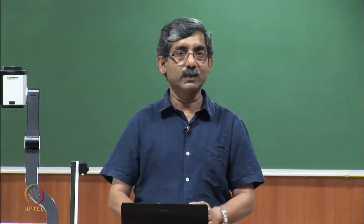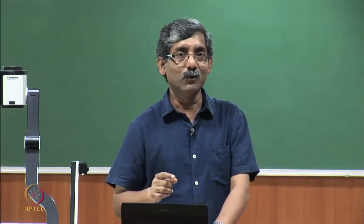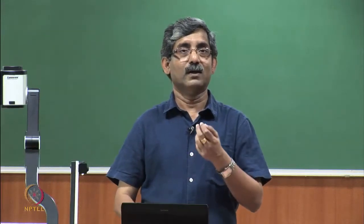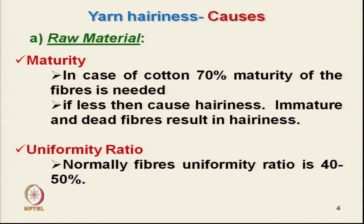Another factor is the uniformity ratio, which is the ratio of 50% span length divided by 2.5% span length, expressed as a percentage. For normal cotton it ranges from 40 to 50%. If the uniformity ratio is less, it means the cotton contains a large quantity of short fibers. Those short fibers will not penetrate the yarn structure, will not take part in migration, and will be projected outside the yarn surface.